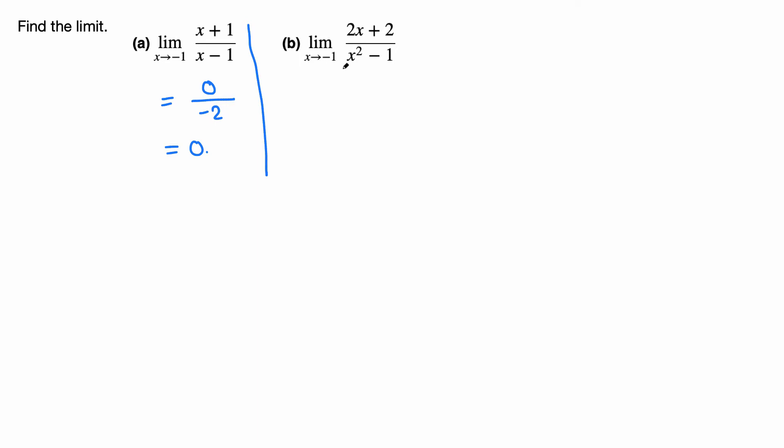In part B, let's do the same thing. If we simply plug in negative 1: 2 times negative 1 is negative 2 plus 2 on the top, over negative 1 squared, which is positive 1, minus 1. So negative 2 plus 2 is 0 over 0. We are dividing by 0.